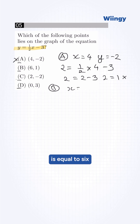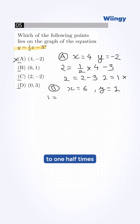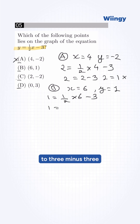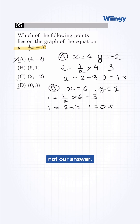Now try option B. Here x is equal to 6 and y is equal to 1. Substituting: 1 is equal to 1/2 times 6 minus 3, so 1 is equal to 3 minus 3, which gives 1 is equal to 0. This is also not our answer, so we eliminate option B.